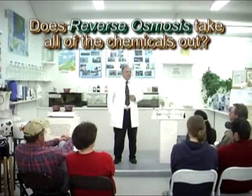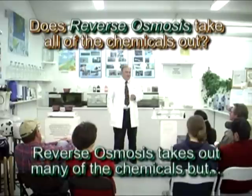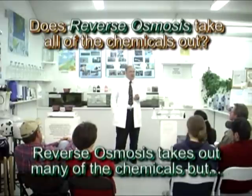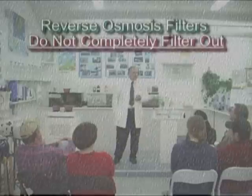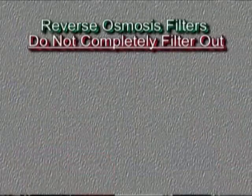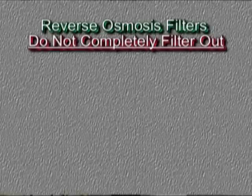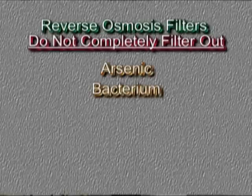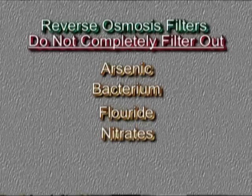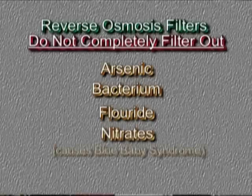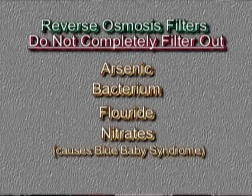Does reverse osmosis take all the chemicals out? Reverse osmosis takes out many chemicals because it has a carbon filter. But there's a lot of things reverse osmosis does not take out. It leaves arsenic, bacterium, fluoride, and nitrates — and we know that 12 parts per million of nitrates causes blue baby syndrome. It also doesn't remove any viruses.